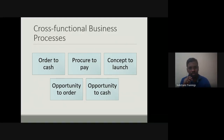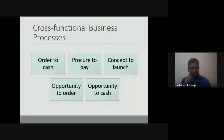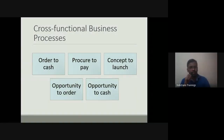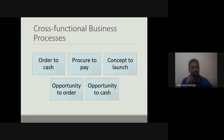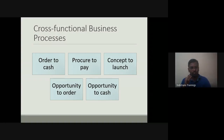We looked at order to cash as one cross-functional process - a simplistic version, but in reality it can be very complex depending on company size. Procure to pay is another: someone in operations needs material, it goes to procurement, a purchase order is issued, material is received, accounting is informed, documentation is generated, and payment is released - three functions involved. Concept to launch is a product development process involving marketing, operations, and the board.